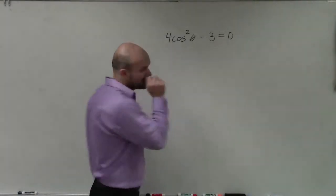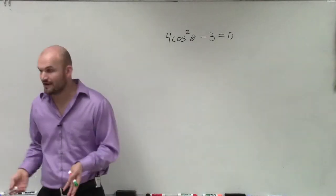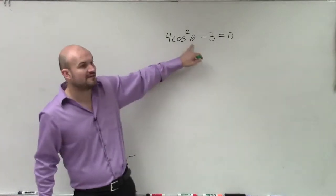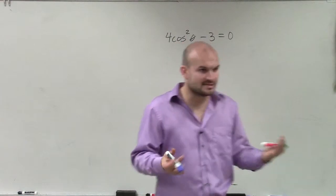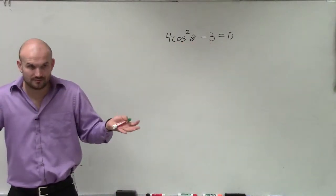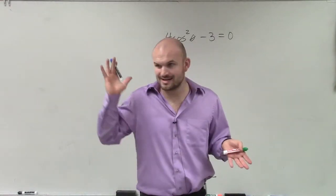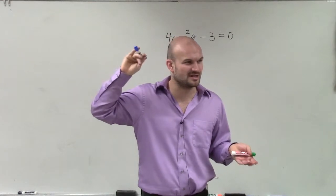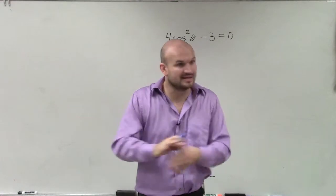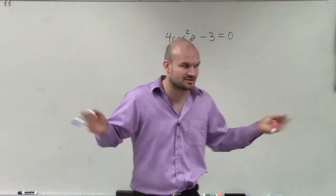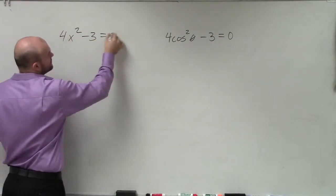On a problem like this, what we have is 4 cosine squared minus 3 equals 0. Now, unlike simplifying or unlike verifying, what we want to do is find the values of theta that are going to make this equation true. A lot of times if you get stuck when you're trying to simplify or verify, you can just use variables — forget about the functions. Just convert this to variables. So instead of cosine, let's do 4x squared minus 3 equals 0.